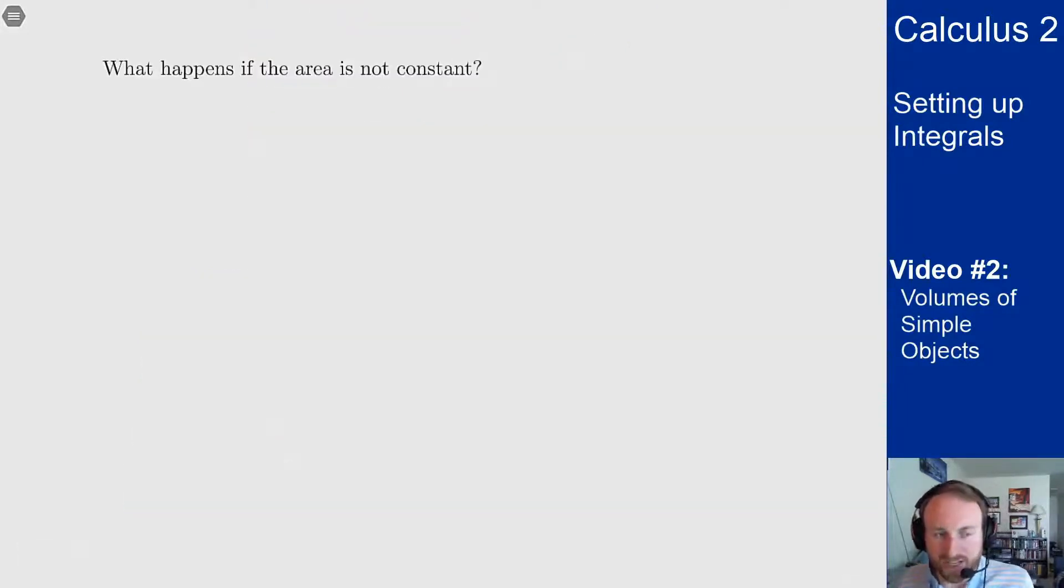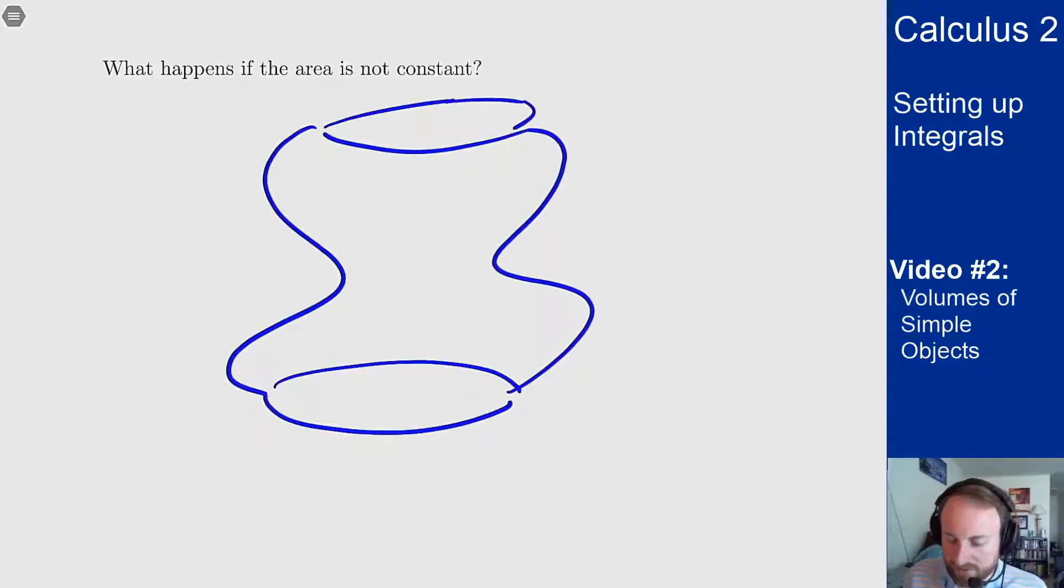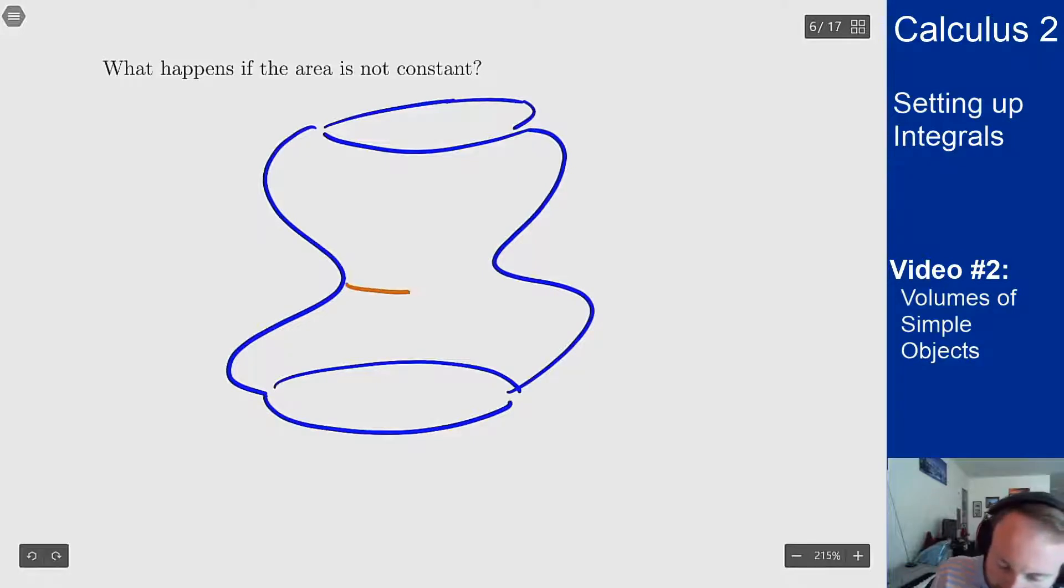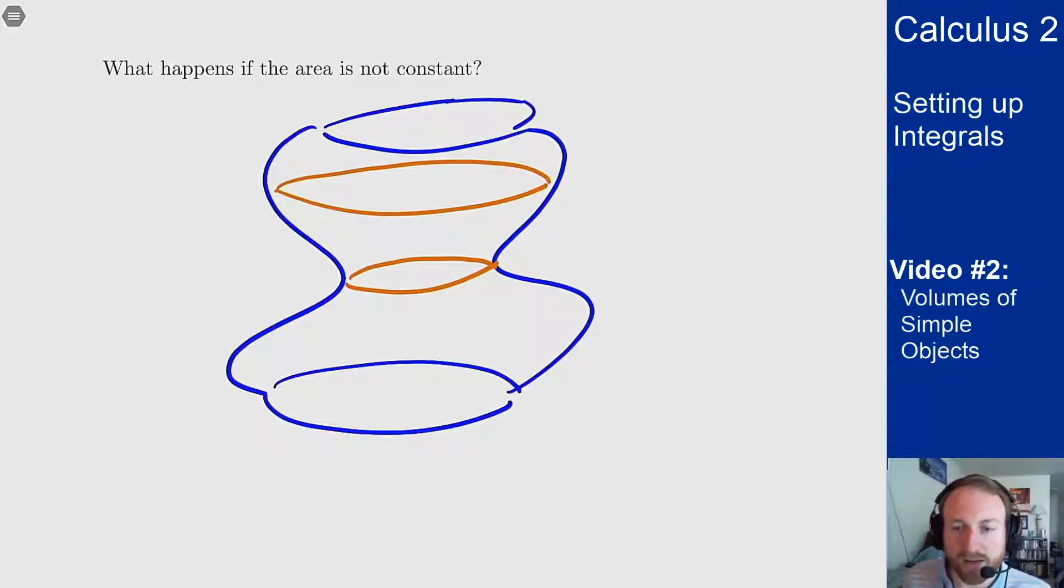Well then we want to think about approximating things and then going down to the integrals that we had before. So if I have an object where the area is not constant at each different slice, something like this, where clearly this in the middle here is a smaller area than this up here, well how can I try to figure out the volume of this object?